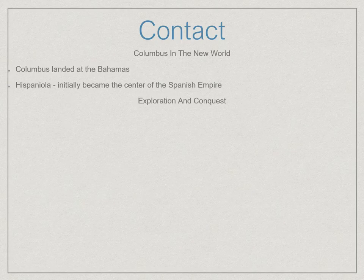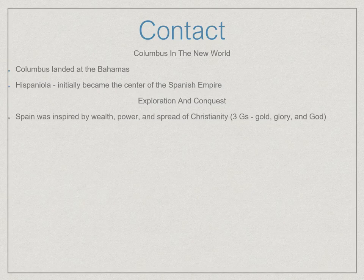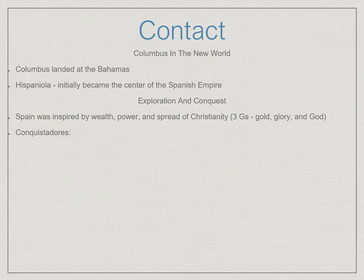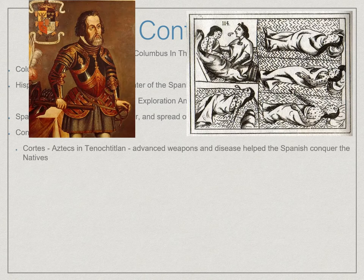Columbus landed in the Bahamas at an area called Hispaniola, which would become the epicenter of the new Spanish empire. Spain very quickly wanted to grow an empire in the Americas — not even realizing it was the Americas at this point. They wanted to expand, spread their faith, get rich, and make names for themselves. This led to groups of people who were very good at doing that in harsh and horrible ways: conquistadors.